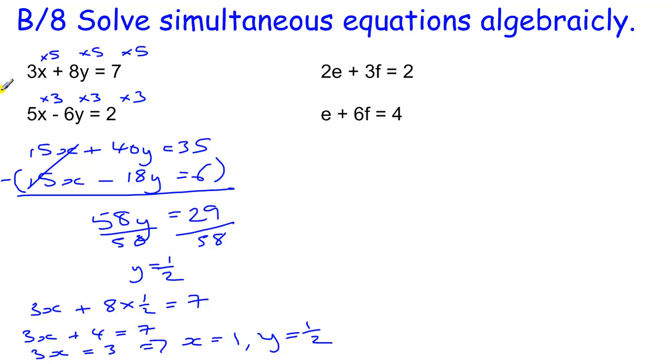Now, sometimes they are not that complicated. Sometimes you just need to multiply by one number. In this pair of simultaneous equations if I multiply the top one by 2 I can make the f's the same. If I multiply the bottom one by 2 I can make the e's the same. I am going to multiply the bottom one by 2.